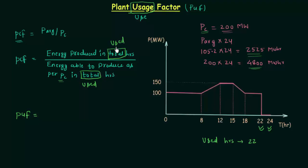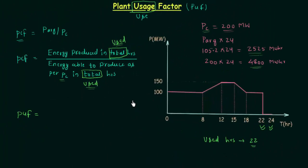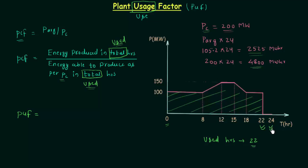The numerator is energy produced in used hours. We can calculate the energy produced by finding the area under the curve, and we will find the area corresponding to the used hours — from 0 hours to 22 hours. From 22 to 24 hours the area is equal to 0, so the area from 0 to 24 is the same as the area from 0 to 22. Energy produced in used hours is the same as energy produced in total hours, because when the plant is not used, the area is 0.